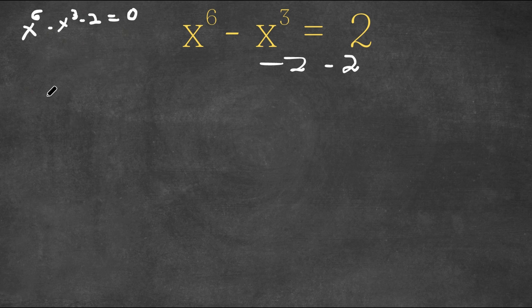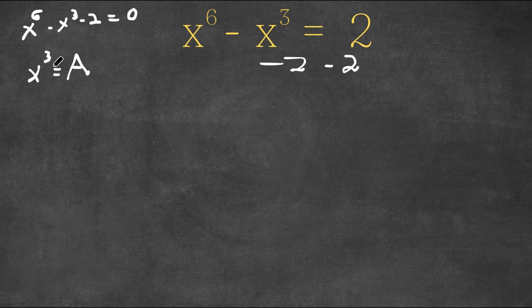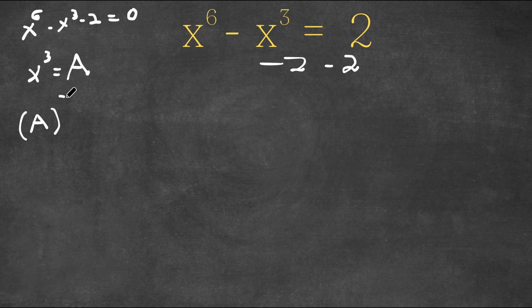So now what I'm going to do is let the variable x to the power of 3 equal a. So now if I plug in a into this equation for x to the power of 3, we get a squared because x to the power of 3 squared is x to the power of 6 minus a minus 2 is equal to 0.